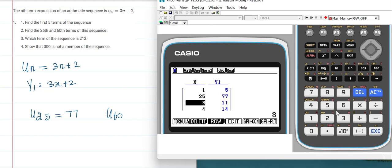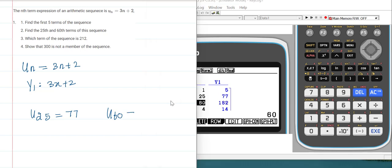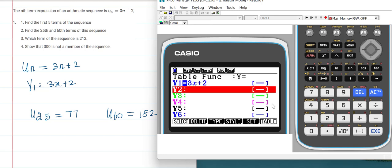Enter 60. It calculates the 60th term: 182. Which term of the sequence is 212?